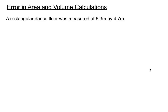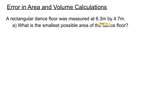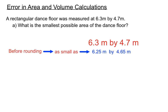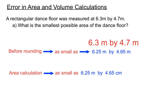Example question: a rectangular dance floor was measured at 6.3 meters by 4.7 meters. The first part asks for the smallest possible area. Before rounding, the first dimension could have been as small as 6.25, rounded up to 6.3, and the second dimension could have been as small as 4.65 before being rounded up to 4.7. Using those two smallest values, the area calculation is 6.25 × 4.65 = 29.0625 m². That gives us the smallest possible area.